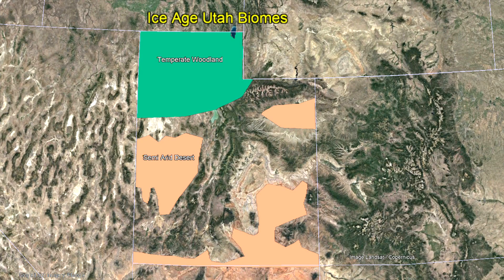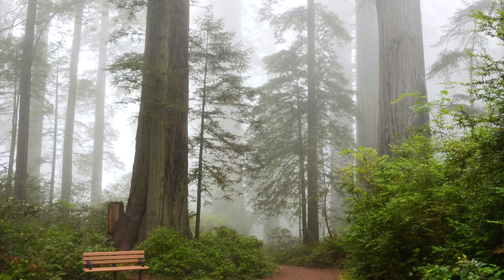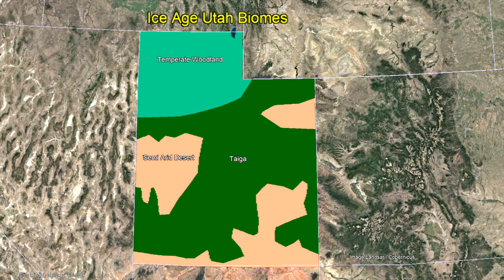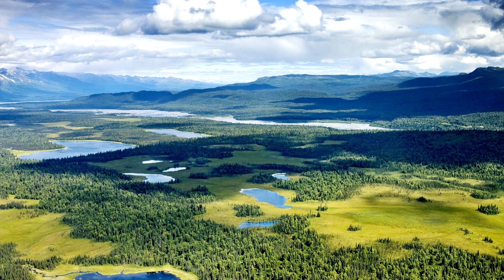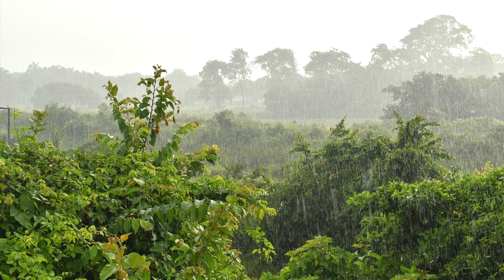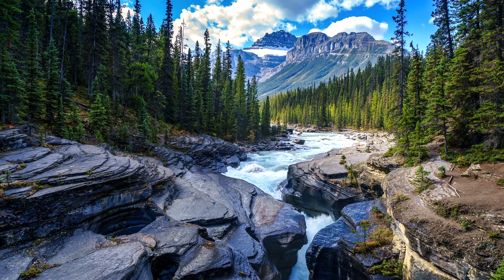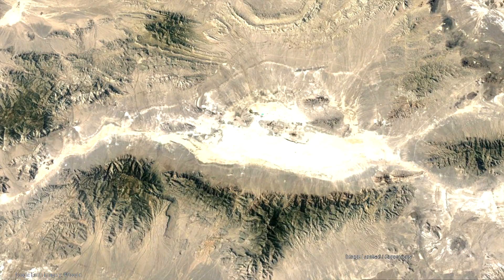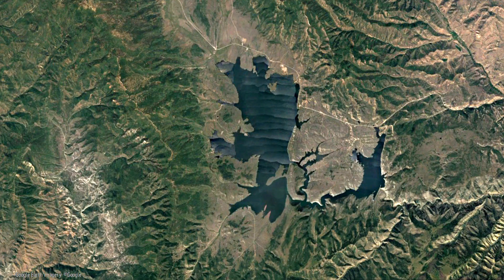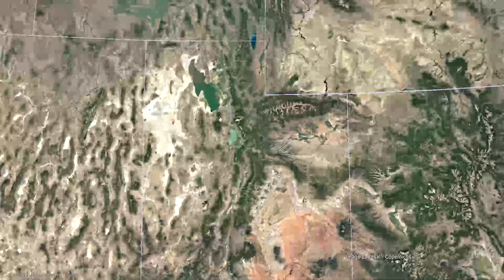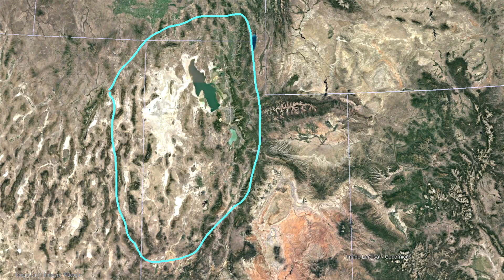On the other hand, mid elevations contained thick forests resembling those seen in eastern California. And high elevations contained thick taiga, a biome today largely found in Alaska. Because of the increased precipitation, large rivers and streams developed. In areas and basins where there was little or no outlet, enormous lakes developed. One of these basins encompassed much of western Utah.